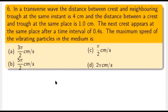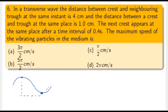Next question: in a transverse wave, the distance between a crest and a neighboring trough at the same instant is 4 centimeters, and the distance between a crest and a trough at the same place is 1 centimeter. The next crest appears at the same place after 0.4 seconds. What is the maximum speed of the vibrating particles? The distance between neighboring crest and trough equals λ/2, so λ/2 = 4 cm, giving λ = 8 cm.